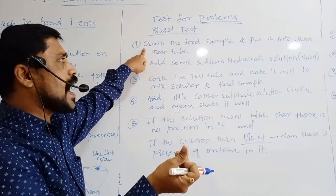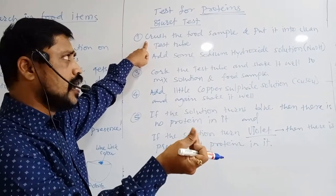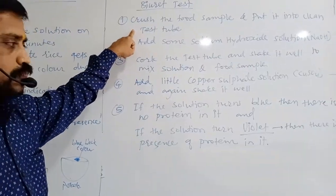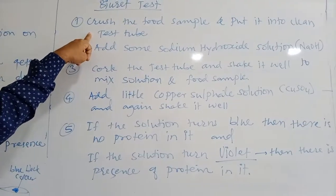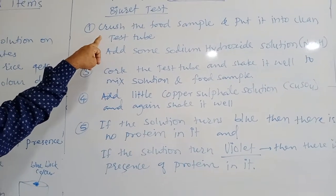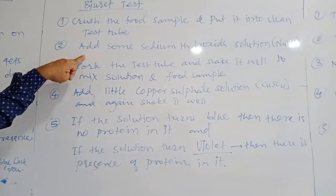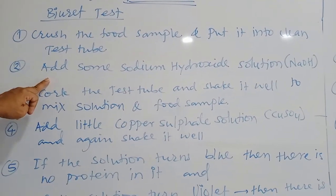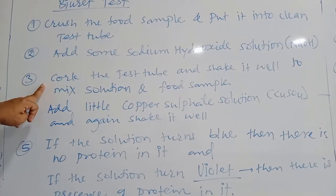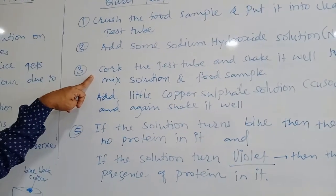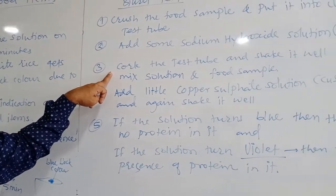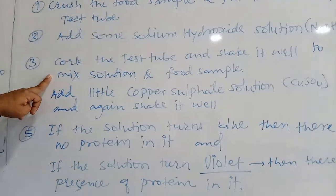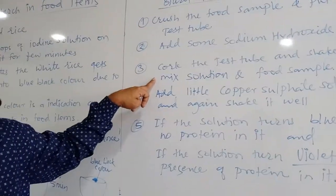Crush the food items and put into clean test tube. We have to use clean test tube. Then add some sodium hydroxide solution in it. Then cork the test tube. Cork means cover the test tube and shake it well to mix solution and food sample.